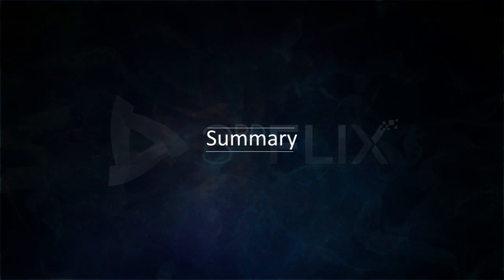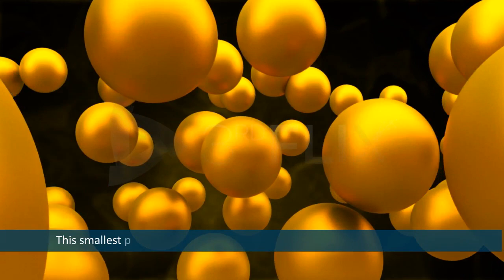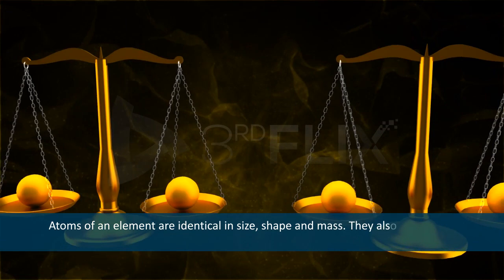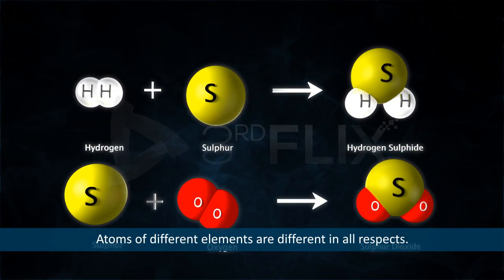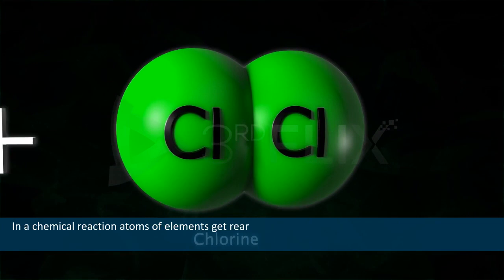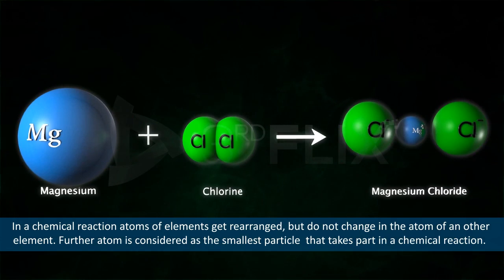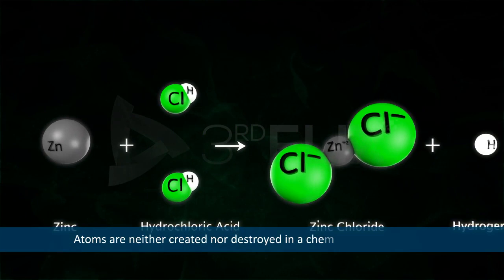Let us now summarize the points of Dalton's atomic theory. All forms of matter, whether an element, a compound, or a mixture, is made up of very tiny particles called atoms. The smallest particle of matter is called an atom and is indivisible. Atoms of an element are identical in size, shape, and mass, and also have the same chemical properties. Atoms of different elements are different in all respects. In a chemical reaction, atoms may get rearranged but do not change into atoms of another element, and the atom is the smallest particle that takes part in a chemical reaction. Atoms are neither created nor destroyed in a chemical reaction. Atoms of different elements combine in fixed proportions or in a whole number ratio to form compounds.